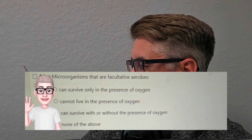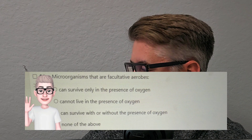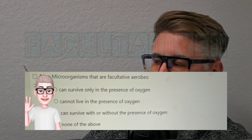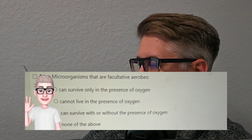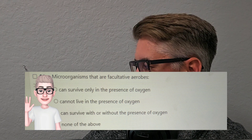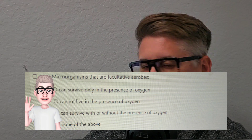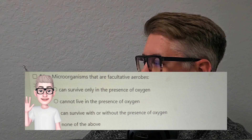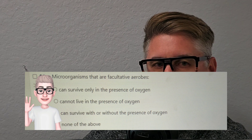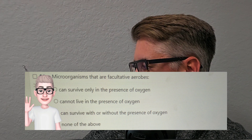Question number two: Microorganisms that are facultative anaerobes — is it A, can survive only in the presence of oxygen? Is it B, cannot live in the presence of oxygen? Is it C, can survive with or without the presence of oxygen? Or is it D, none of the above? Push pause if you want to think about it. The answer is C — can survive with or without the presence of oxygen. Not a good type of bacteria.